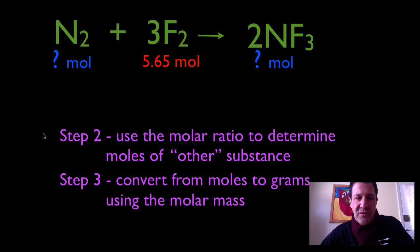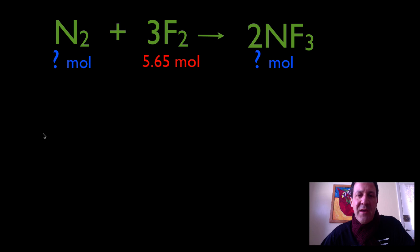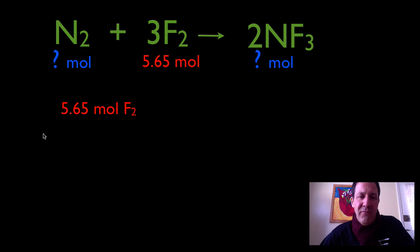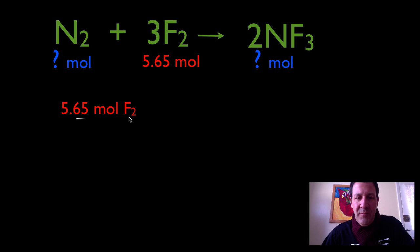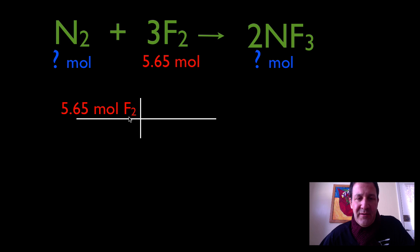We're going to use the molar ratio. The way we start this is we're going to write down the number of moles and the chemical formula for the substance that we've been given. You should always write down these three things: the number, the unit, and the chemical formula. That will help you to stay more organized. I know it seems like a little bit of extra writing, but it'll help you out in the end.